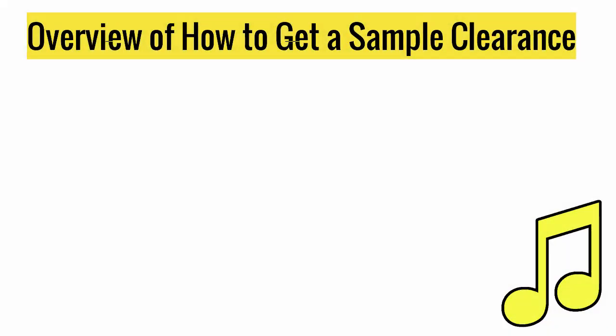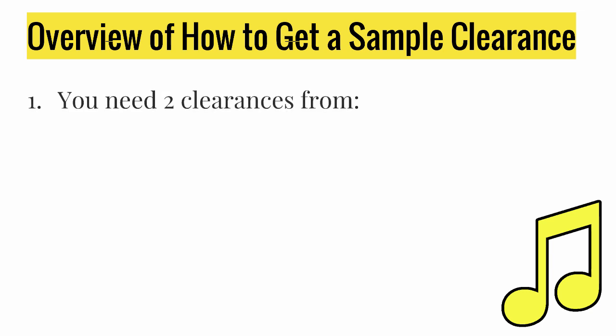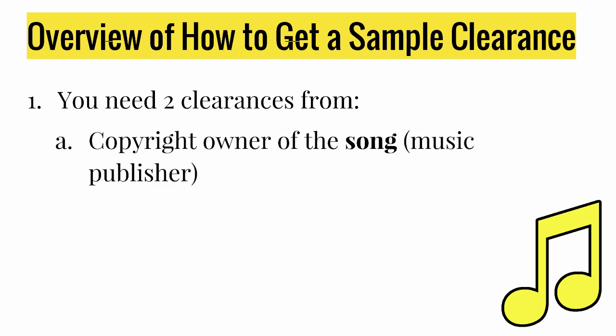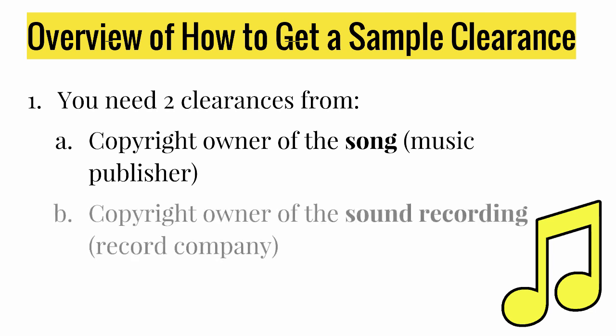Let's start with an overview of how to get a sample clearance before we go into detail of every step. In order to use a sample, you need to get permission from two sources: one from the copyright owner of the song, which is typically the music publisher, and one from the copyright owner of the sound recording, which is typically the record company. The copyright for the song protects your lyrics and melody only, and the copyright for the sound recording covers that particular recording of the song.